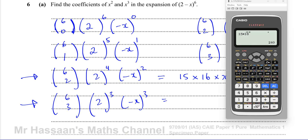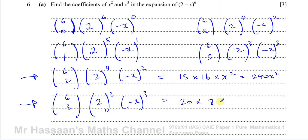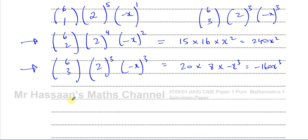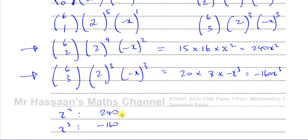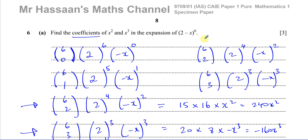For the x cubed term I use 6C3: that gives 20. So it's 20 times 2^3, which is 8, times (−x)^3, giving minus 160x cubed. The question asks for the coefficients, so the coefficient of x squared is 240, and the coefficient of x cubed is minus 160. Don't write the x squared or x cubed alongside the coefficient — write them separately as just the numbers.